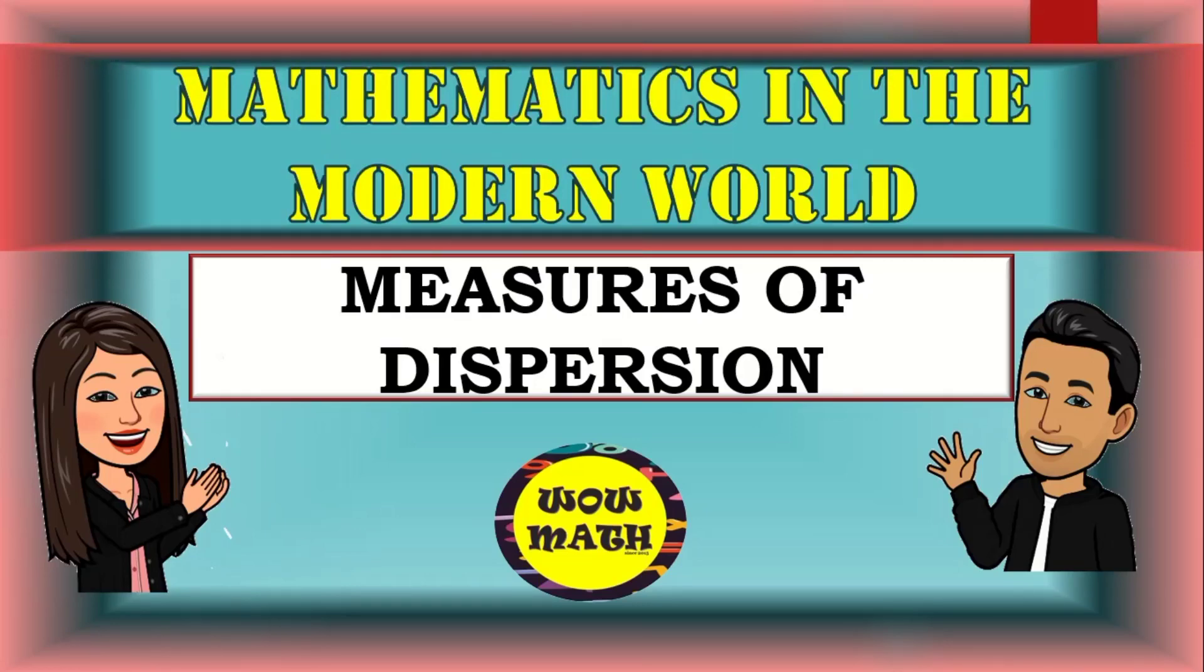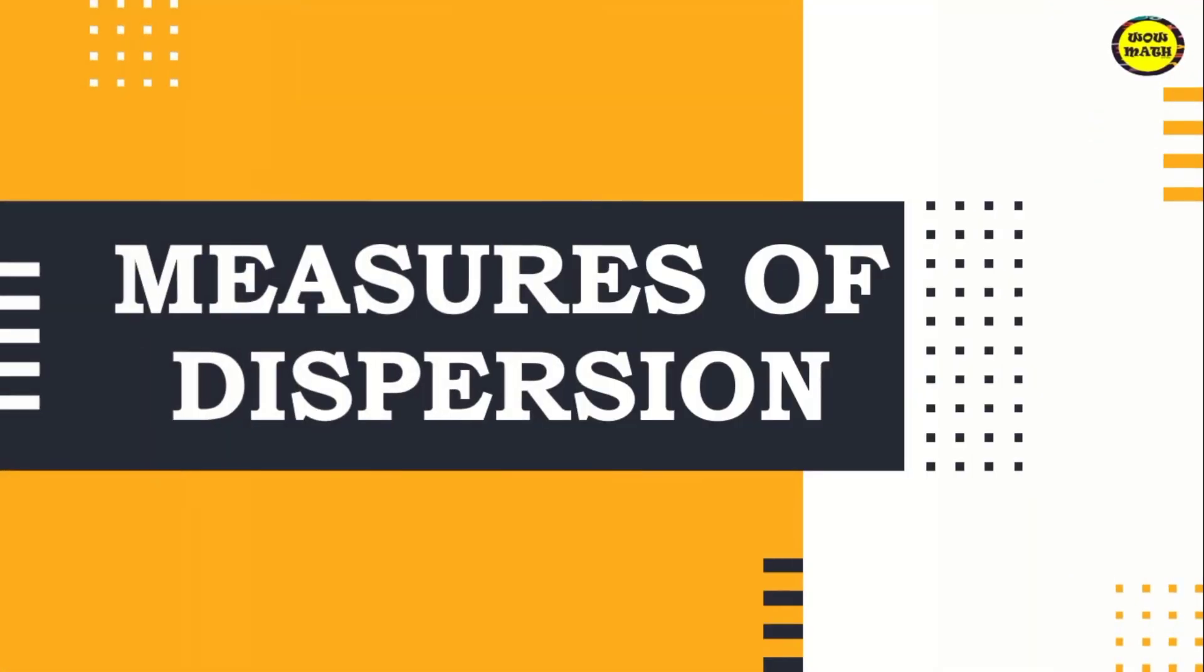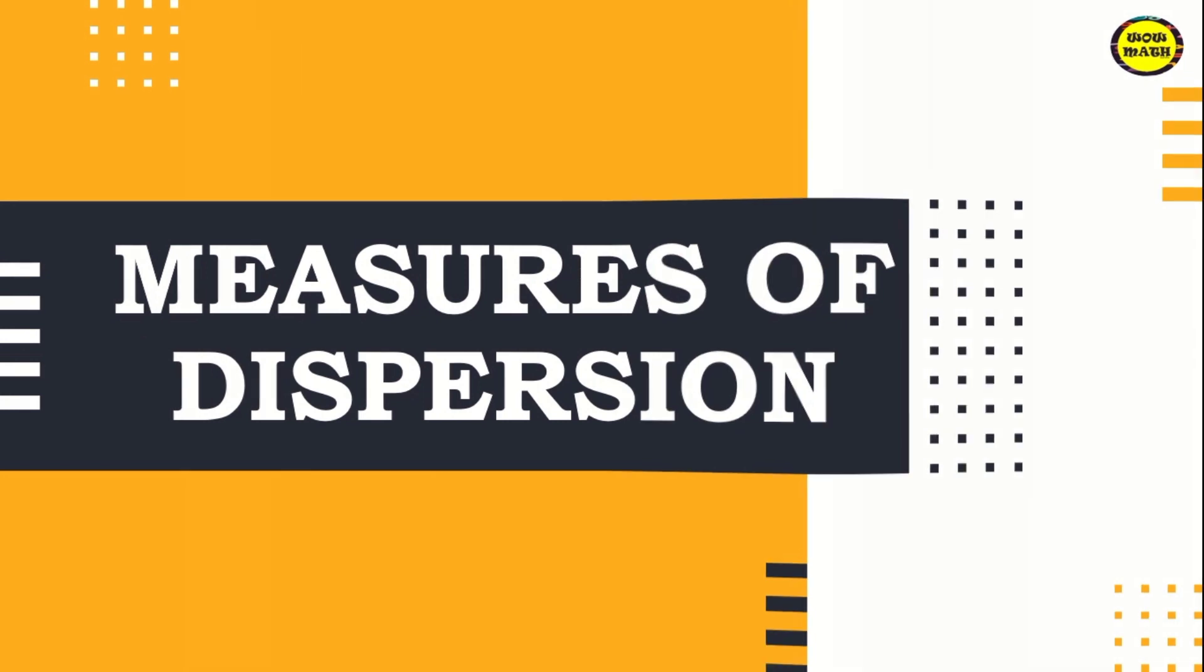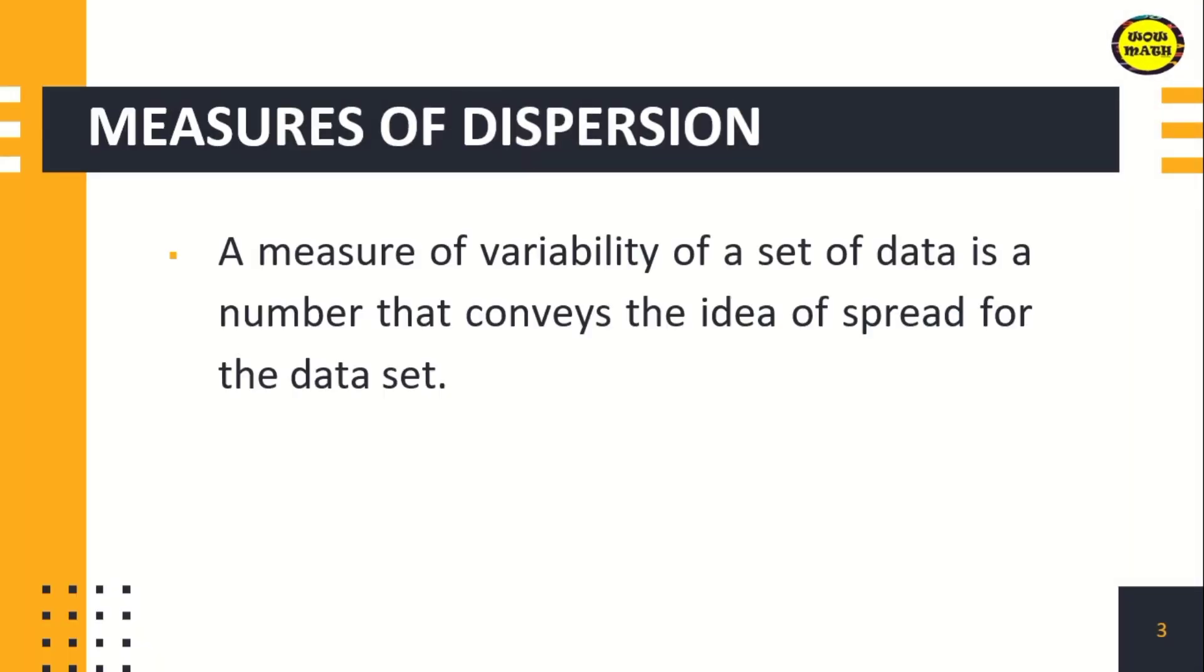Hello everyone, so in this video we are going to discuss measures of dispersion. A measure of variability or dispersion of a set of data is a number that conveys the idea of spread for the data set.